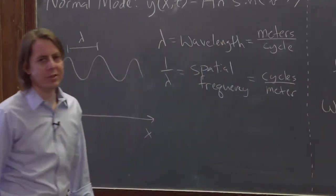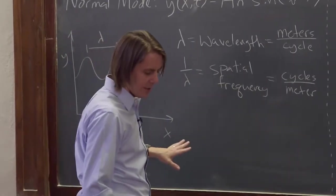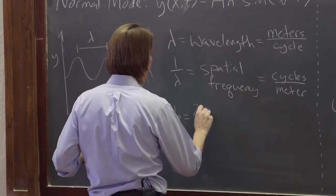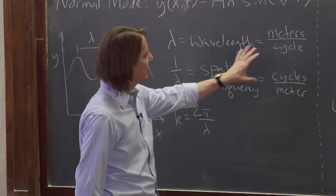What we do is jump straight to the radian version of this, and that is k. That's what I'm here to tell you about. k is 2π over lambda, because instead of cycles per meter, we care about radians per meter.